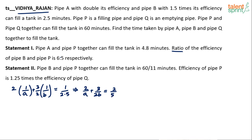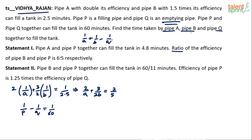Pipe P and pipe Q together can fill the tank in 60 minutes. Since Q is an emptying pipe, it does negative work, so: 1/p − 1/q = 1/60. That's Equation 2. We need to find the time taken by pipe A, B, and Q together, meaning we need to find 1/a + 1/b − 1/q. The reciprocal of that result will give the total time. So from the question data we have two equations with four variables: a, b, p, and q.